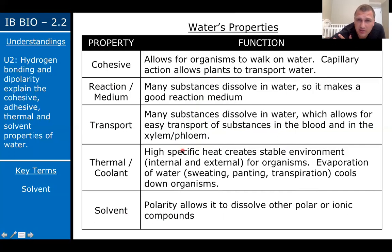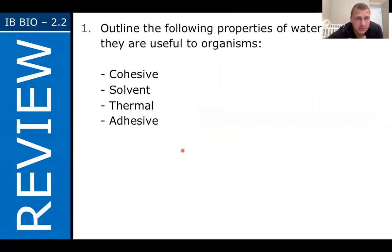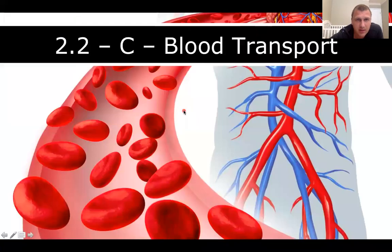This is a good summary chart — you have water's properties, function, cohesiveness, reaction medium, transport, thermal coolant, and solvent. Make sure you look through the slide; feel free to pause and read through it. These review questions for 2.2B will also be thrown onto the same review question Google doc. So let's now talk about blood transport.